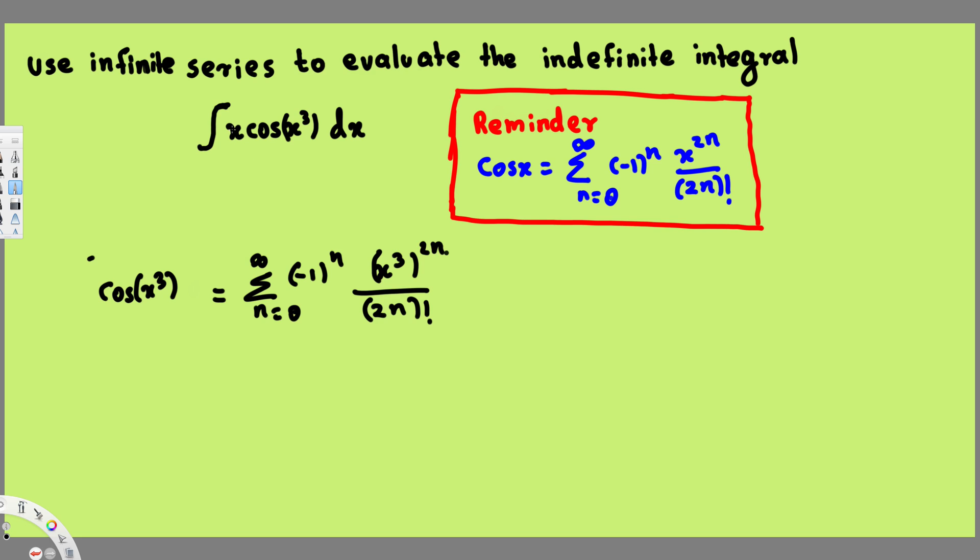Now what we have to do is we have to multiply this one by x. If I multiply this one by x, x cos(x³) is same as multiplying this one by x.